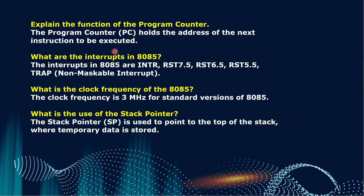Explain the function of the program counter. The program counter holds the address of the next instruction to be executed. What are the interrupts in 8085? The interrupts in 8085 are: INTR, RST7.5, RST6.5, RST5.5, and TRAP.